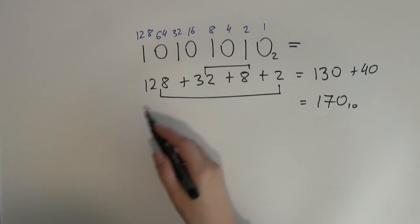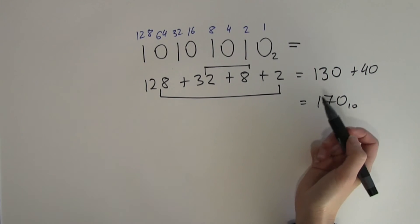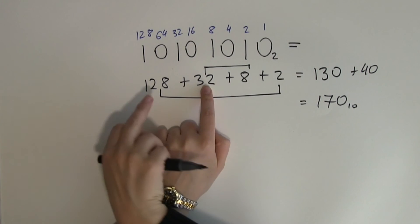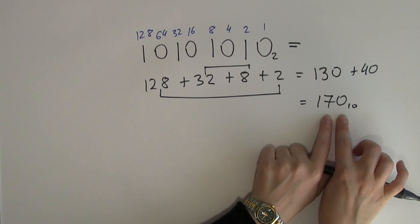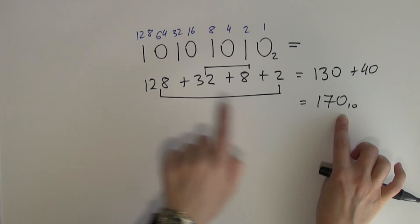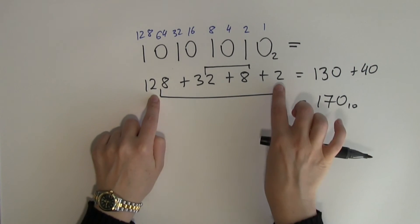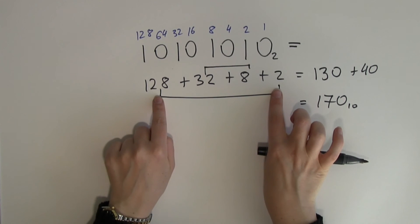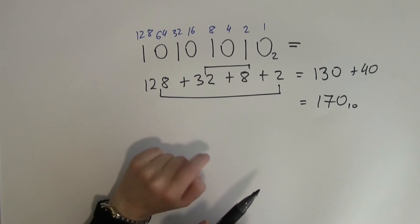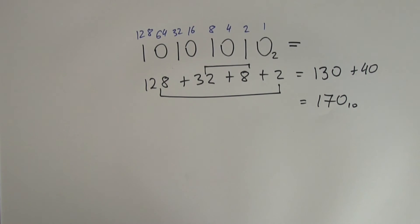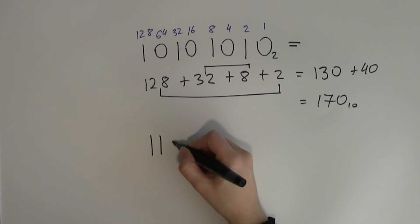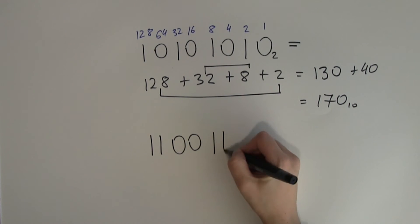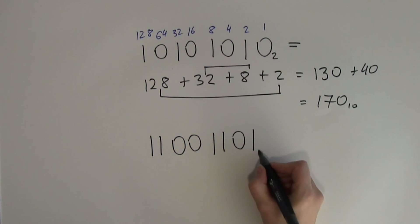I could have chosen a different combination — for example 32 and 128, then 8 plus 2 — and still end up with 170. But adding 128 plus 2 first is slightly simpler. The last example for today's video is 11001101 in binary.